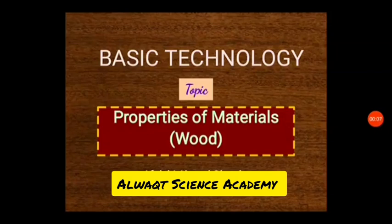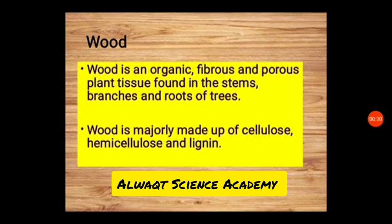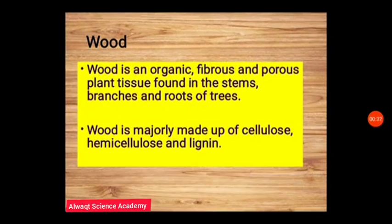Today we shall be looking at the topic: properties of materials, specifically properties of wood. Wood is one of the technological materials used in the production of technological products. Wood is an organic, fibrous, and porous plant tissue found in the stems, branches, and roots of trees.